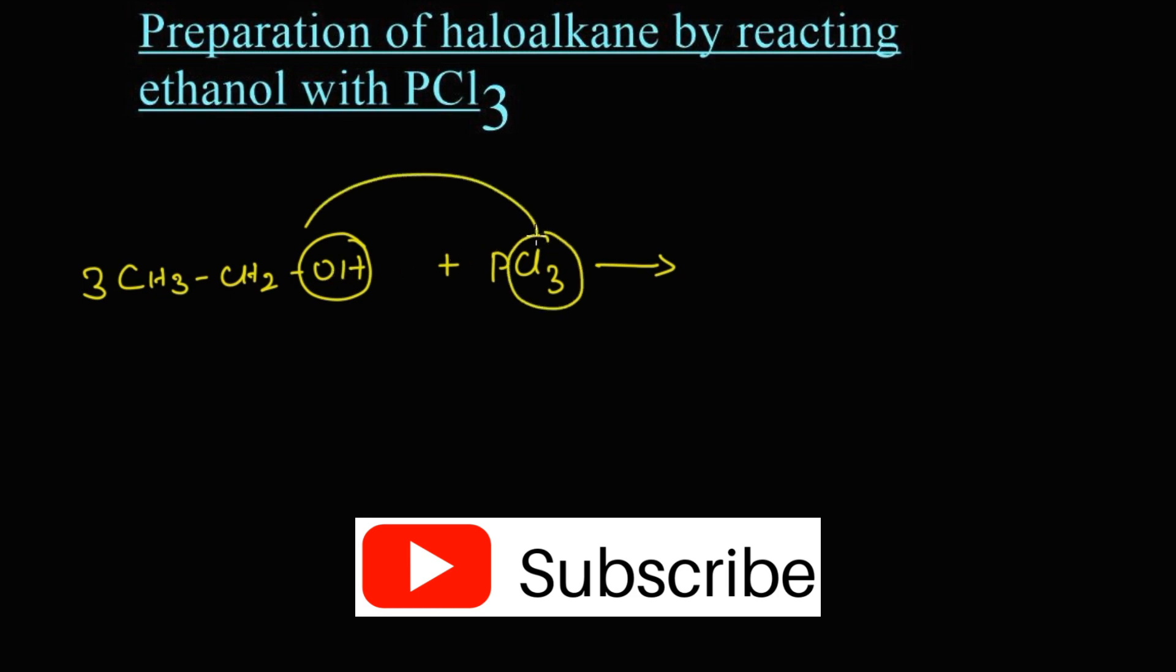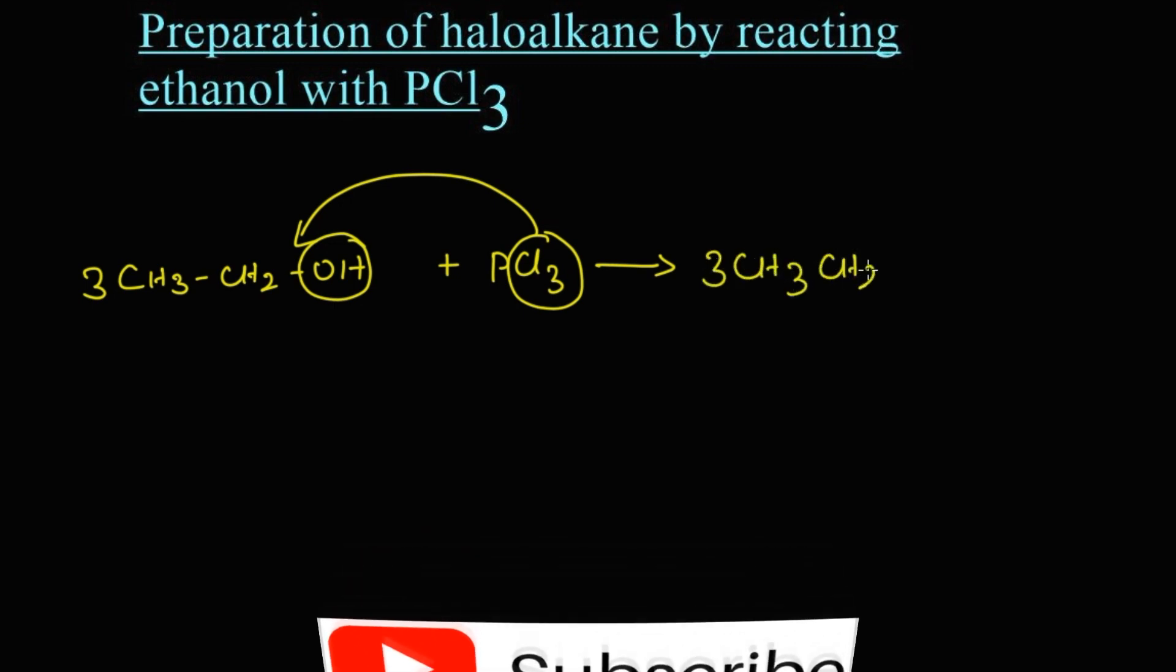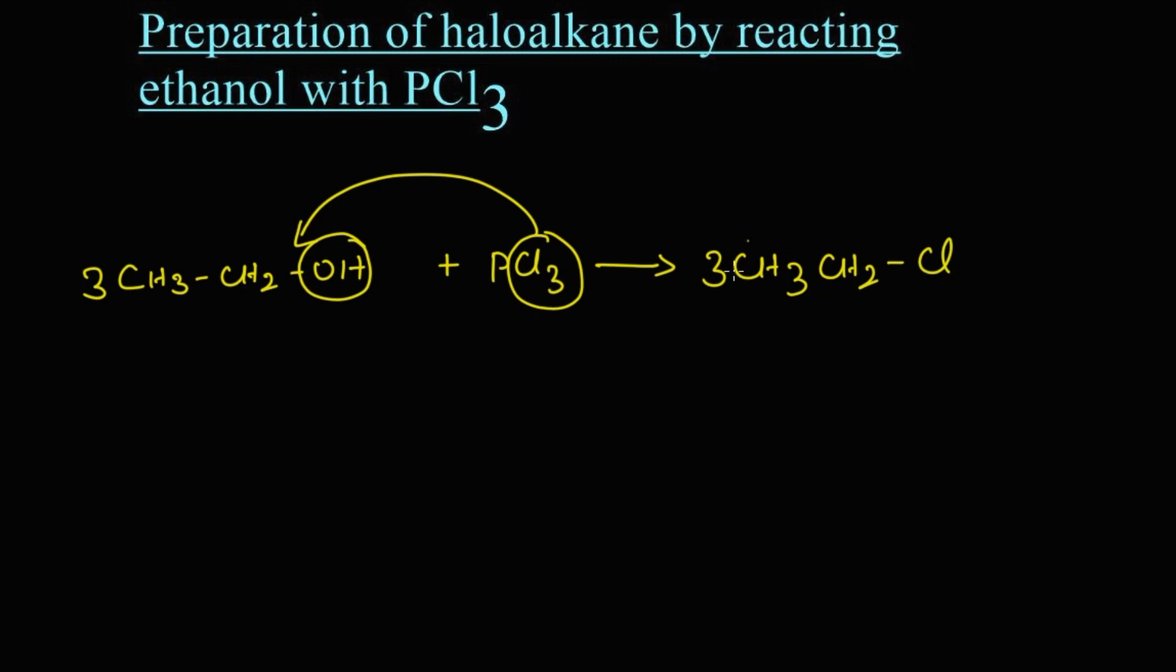So we get three CH3-CH2-Cl, that is chloroethane. The remaining thing here - three hydrogen and three oxygen are there - so H3, here one phosphorus, that is H3PO3. This is phosphorous acid, an inorganic acid.